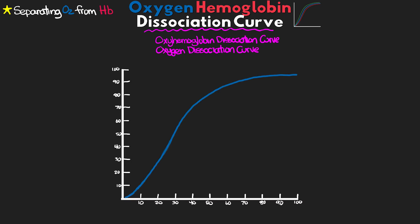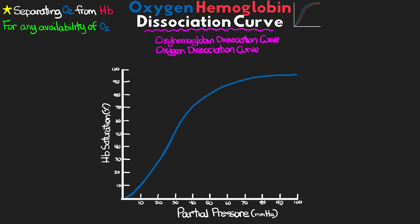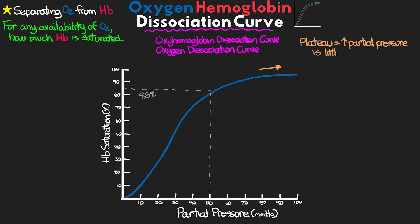Along the x-axis we have the partial pressure of oxygen, and along the y-axis we have the percent of hemoglobin saturation. The curve itself has an S-shaped or sigmoid appearance. What this curve represents is that for any given availability of oxygen — our partial pressure — how much hemoglobin is going to be saturated. For example, at a partial pressure of 50 mmHg, we would expect a saturation of 85%. Towards the right of the curve, we see a plateau as we approach 100% saturation — as we increase the partial pressure more and more, we really don't see much increase in saturation. Once fully saturated at 100%, it's impossible to go any further.